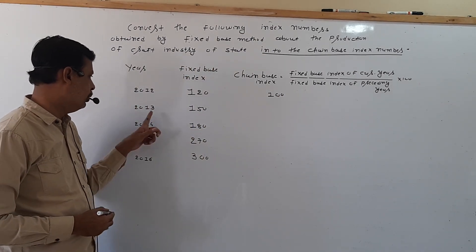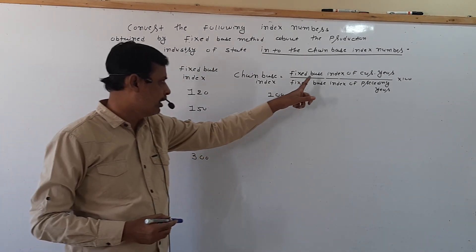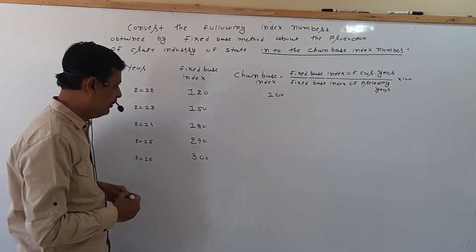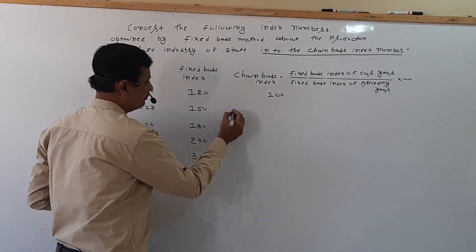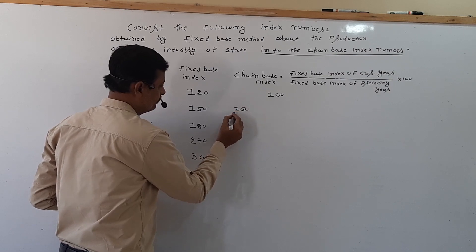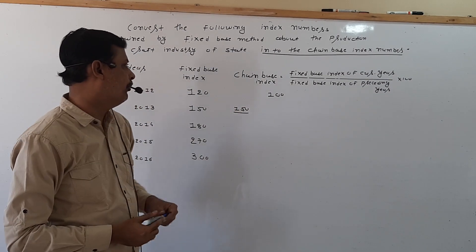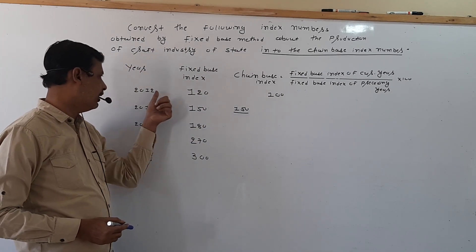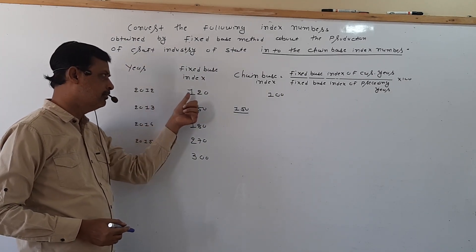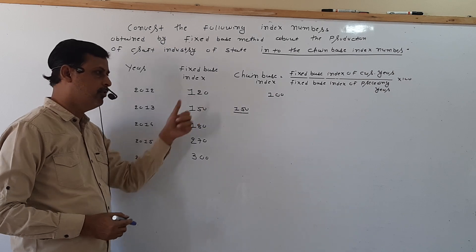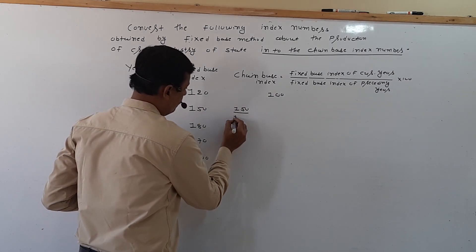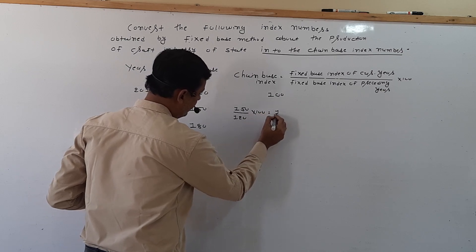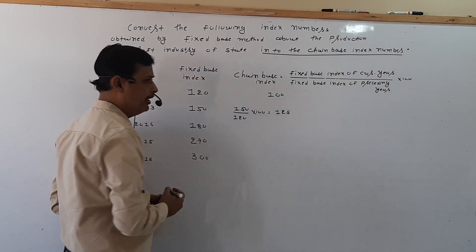Now in 2013, the fixed base index of the current year is 150, upon the fixed base index of the preceding year — 2013 preceding is 2012 — and the fixed base index is 120. So, 150 divided by 120 into 100, that is 125.